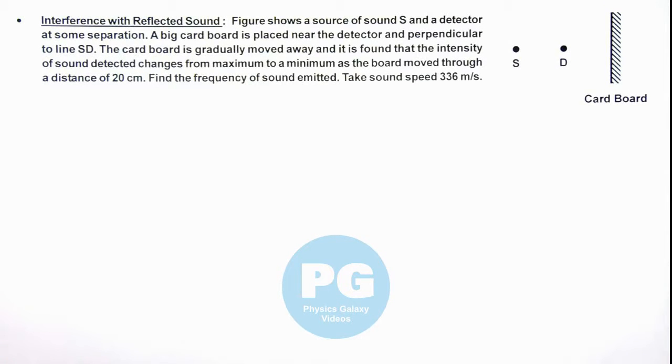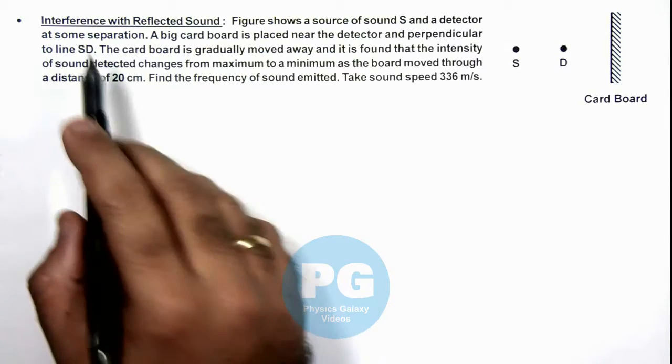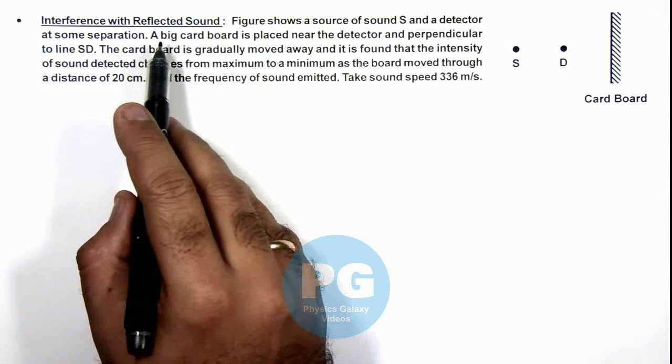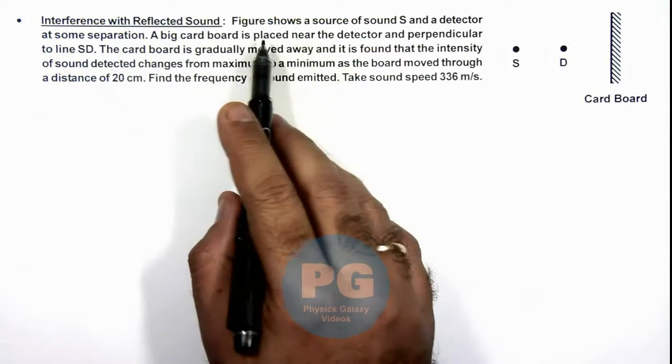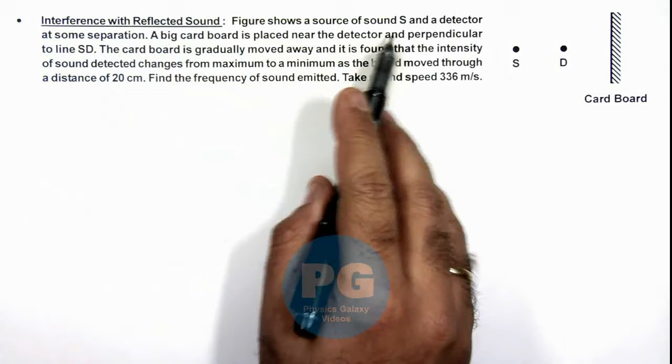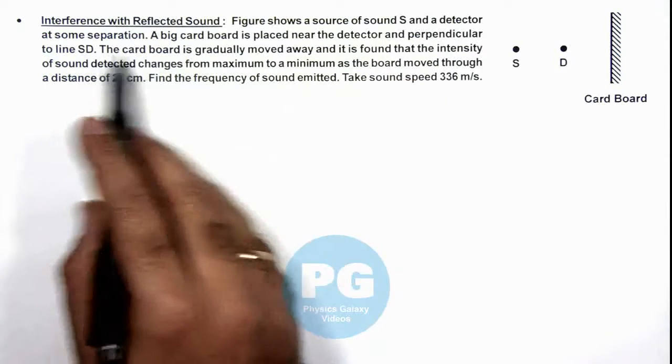In this illustration, we'll be discussing interference with reflected sound. Here we are given that the figure shows a source of sound S and a detector at some separation.